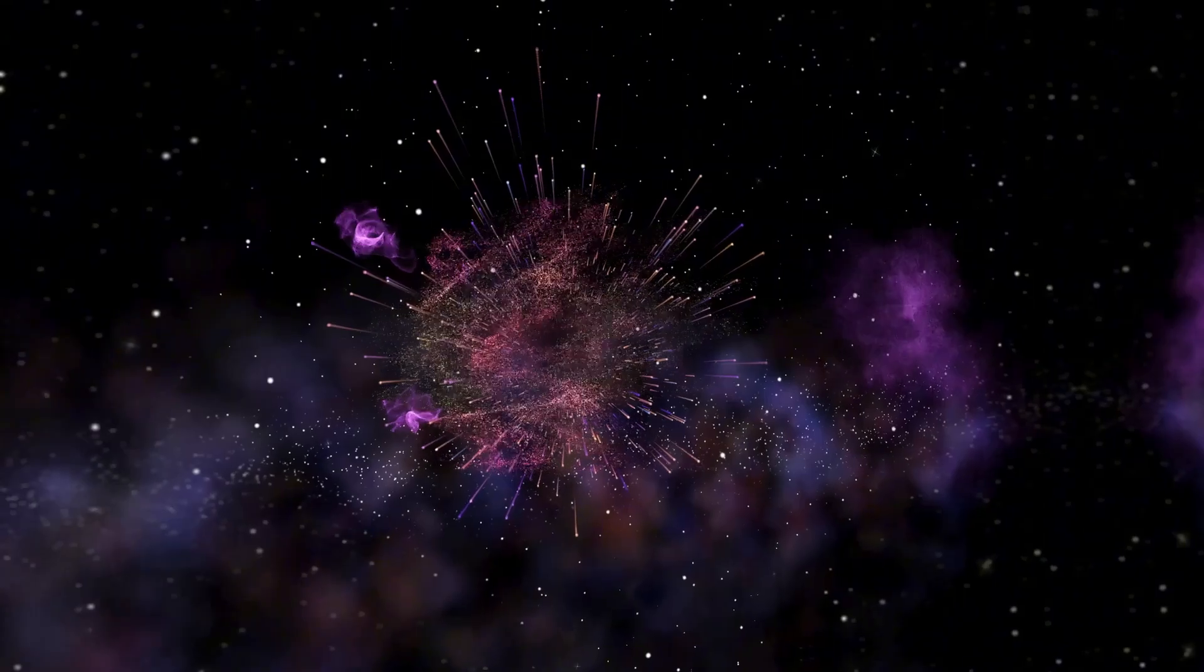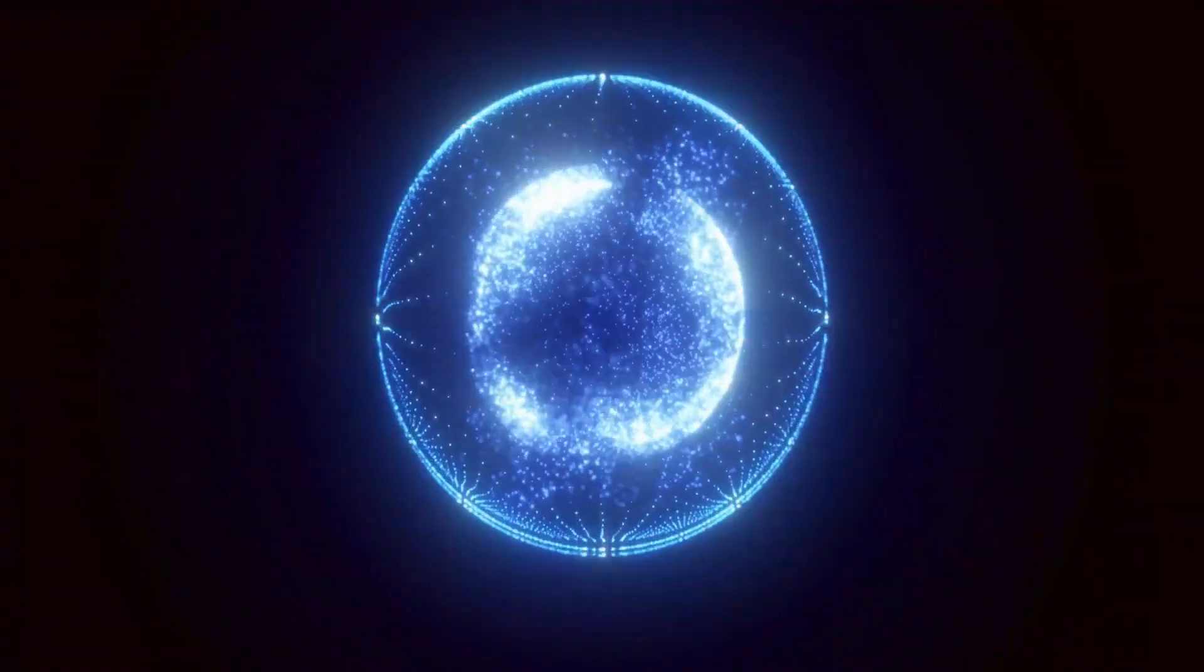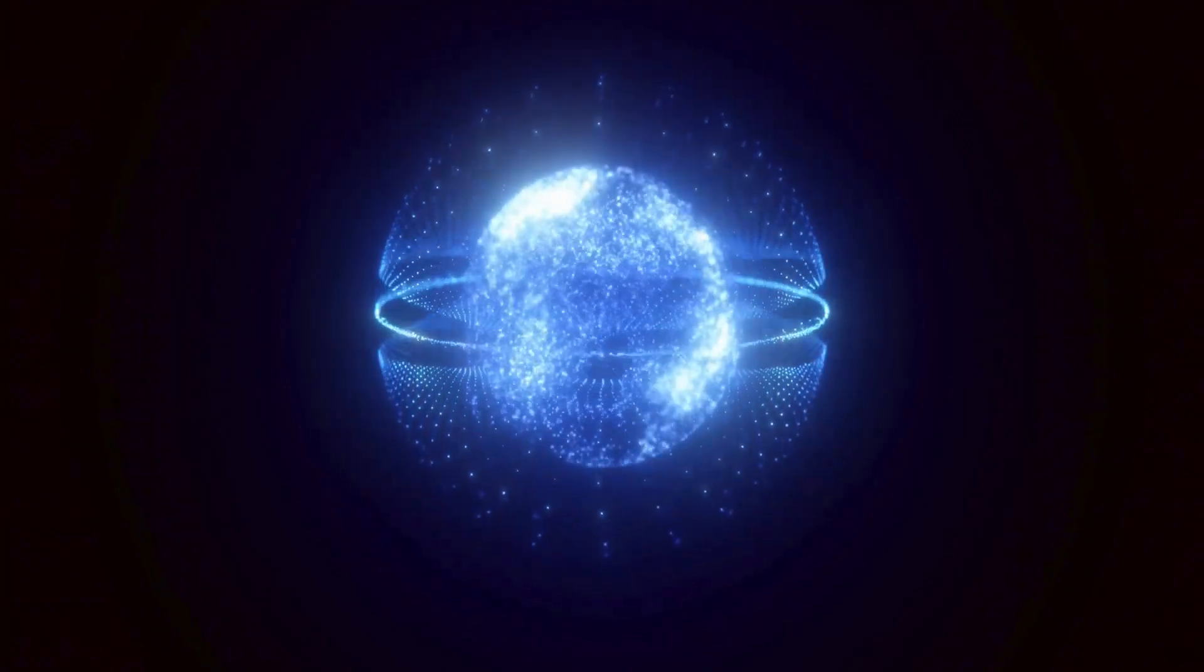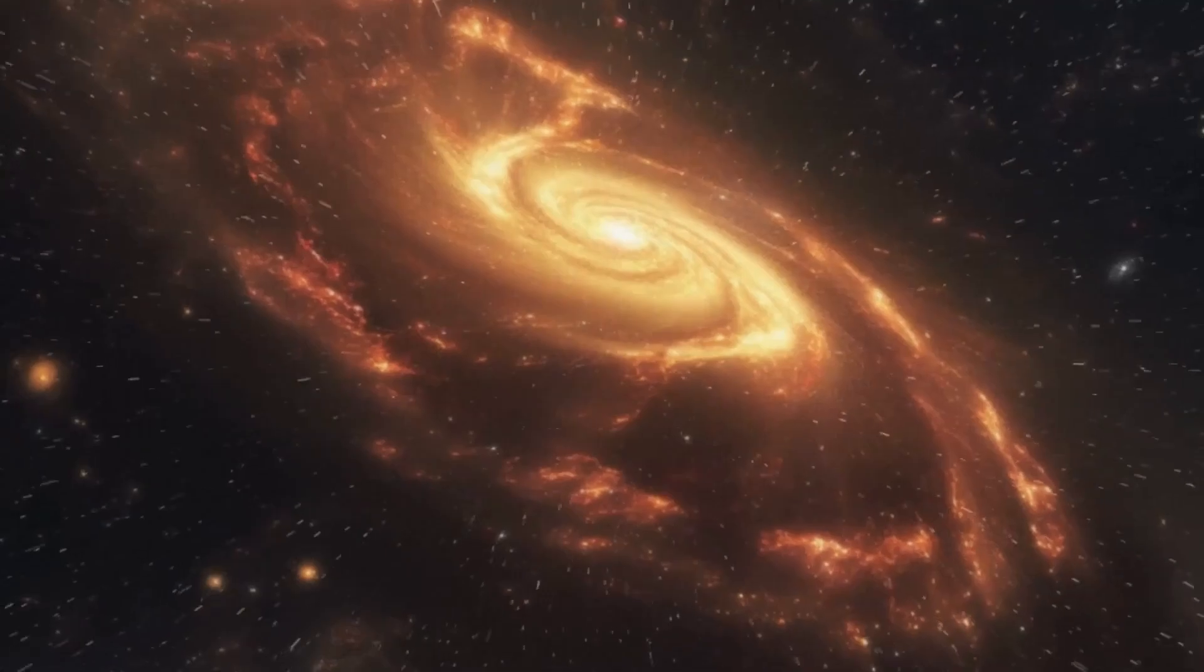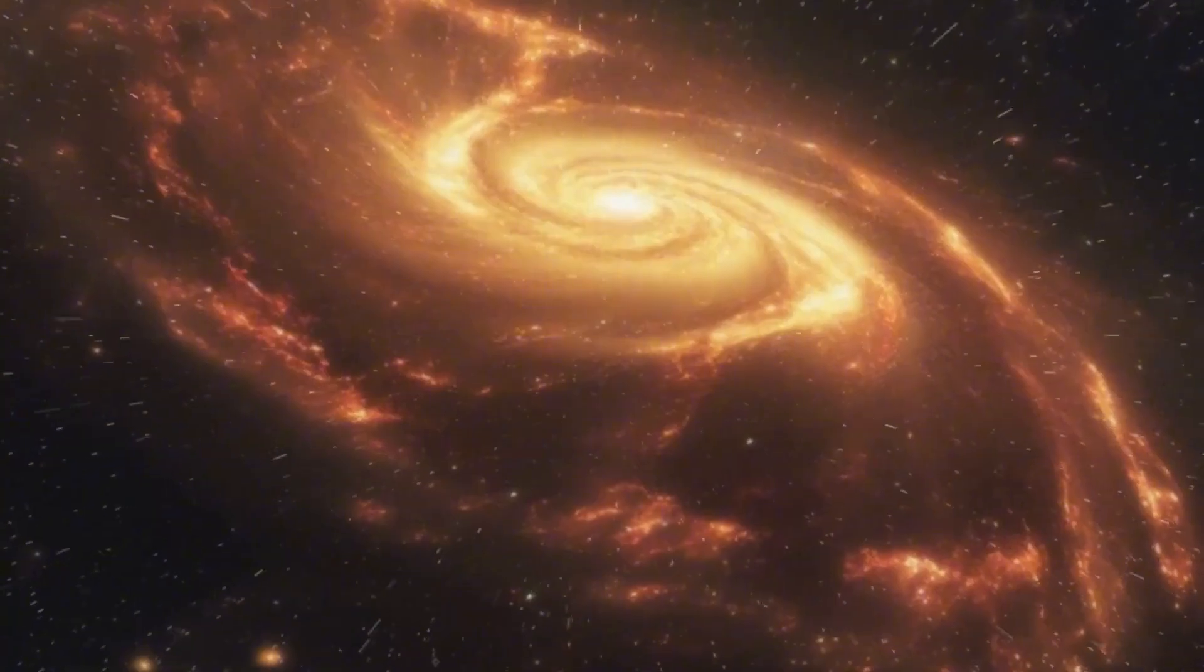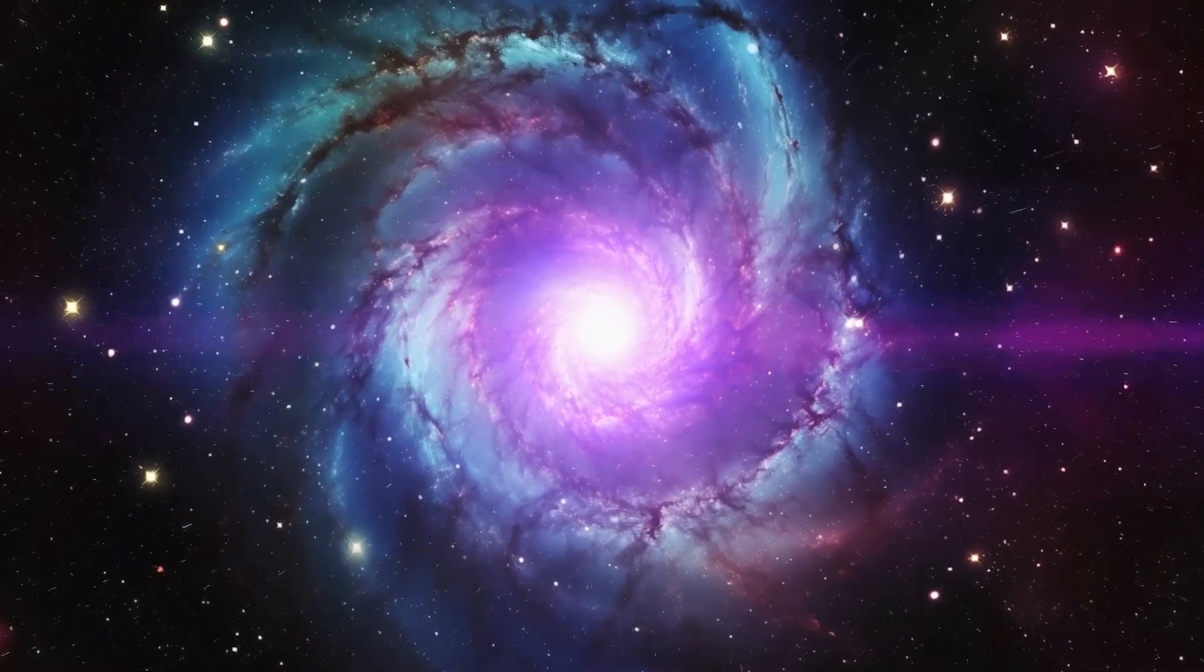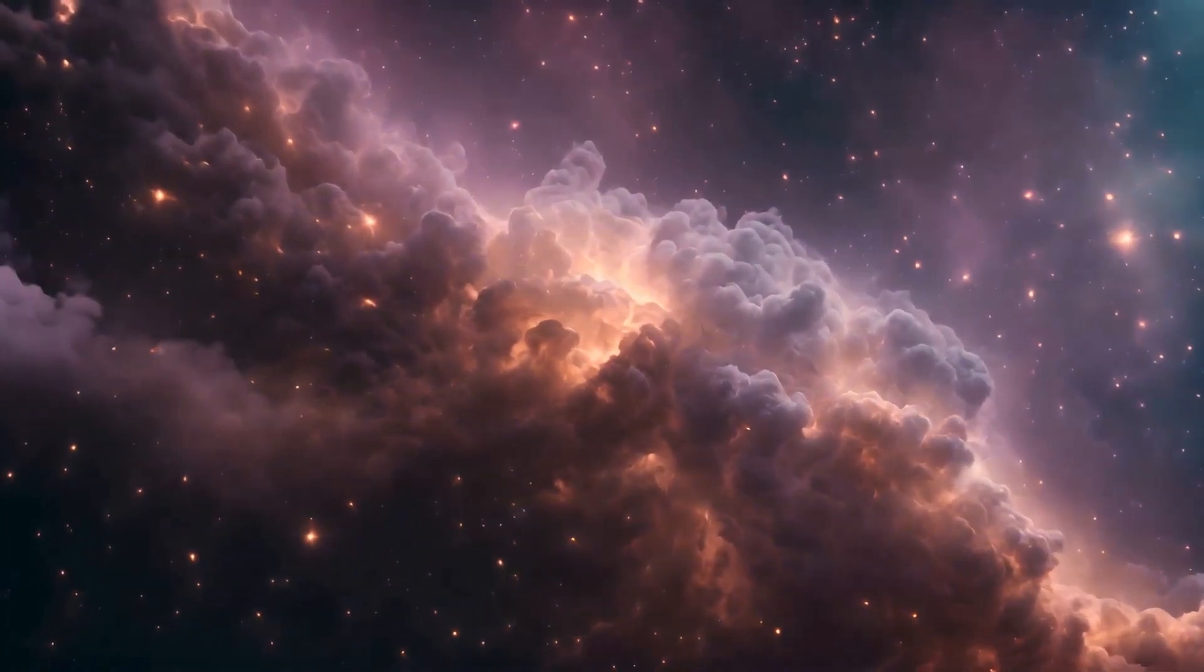The dangers posed by a supernova do not cease immediately after the explosion. The remnants of the explosion, including shock waves traveling at nearly the speed of light, would continue to pose threats as they spread throughout the solar system. These shock waves could further damage the ozone layer, subjecting Earth to an even greater risk of harmful radiation. Moreover, the long-term consequences of a supernova's energy release could linger for centuries, leaving lasting damage to the planet.